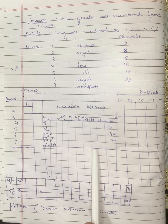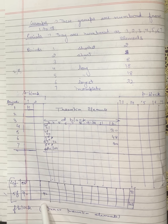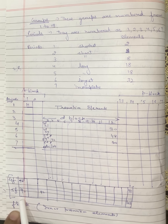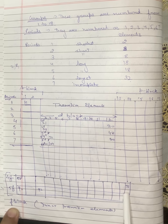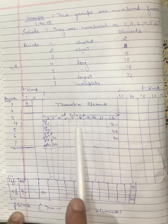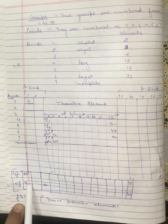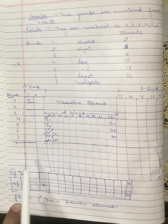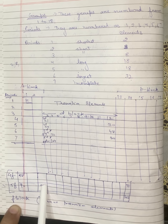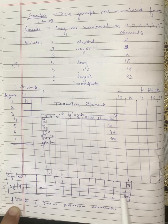The f-block includes 4f and 5f series, called inner transition elements. The 4f series (lanthanides) contains elements 58 to 71, where electrons fill the n-2 shell. The 5f series (actinides) runs from element 90 (thorium) onwards. Element 92 is uranium, and all elements beyond uranium are man-made synthetic elements, called transuranic elements.